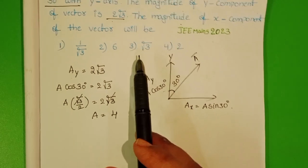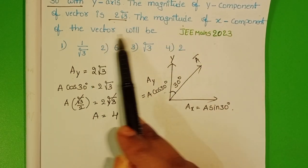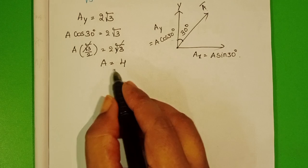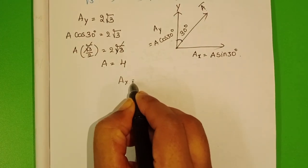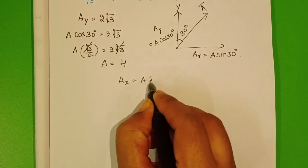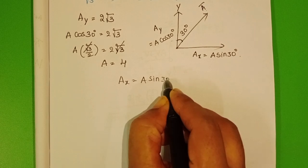Here we have to find out the magnitude of X component of the vector. AX equals A sin 30 degrees.